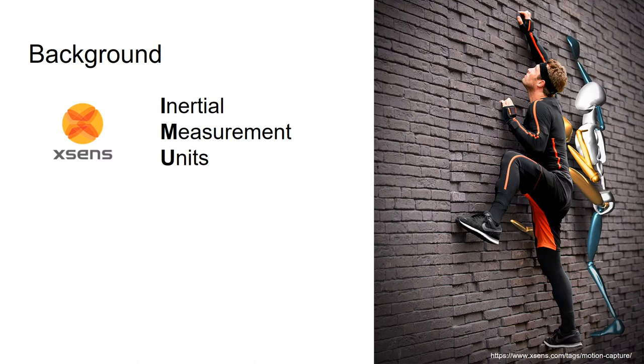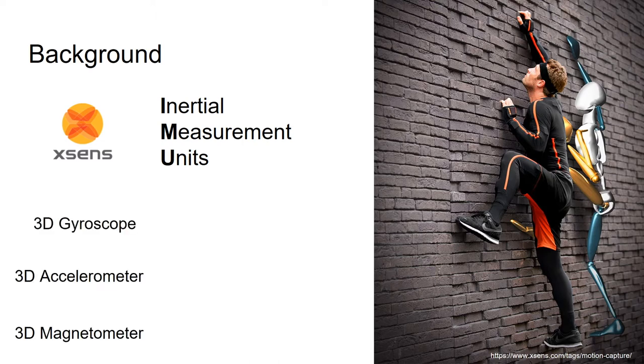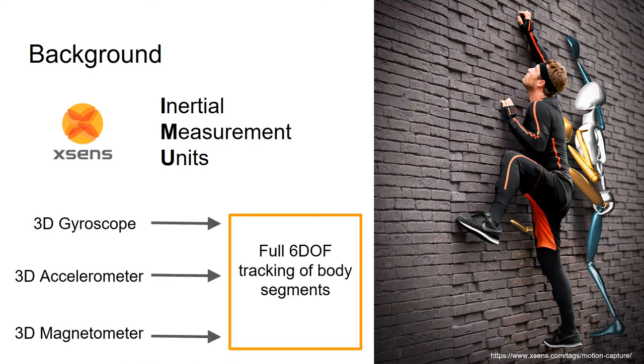Inertial measurement units, or IMUs, have become increasingly popular devices used for kinematic measurements. One company with an IMU system is XSens. In each IMU there is a 3D gyroscope, a 3D accelerometer, and a 3D magnetometer, which together give full 6 degrees of freedom tracking of body segments.